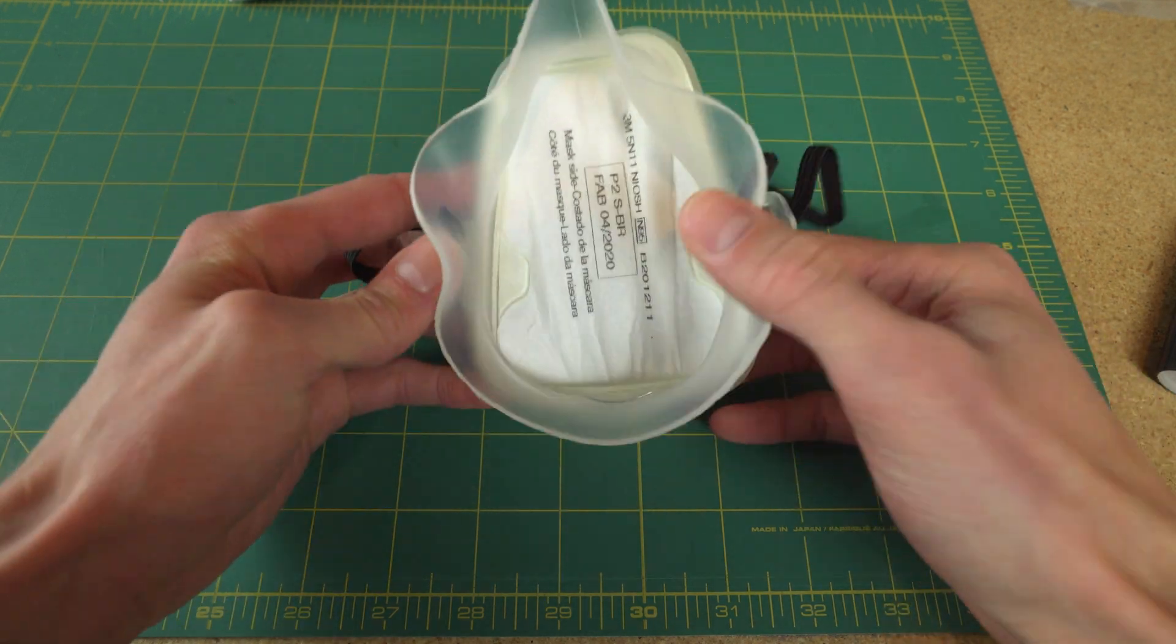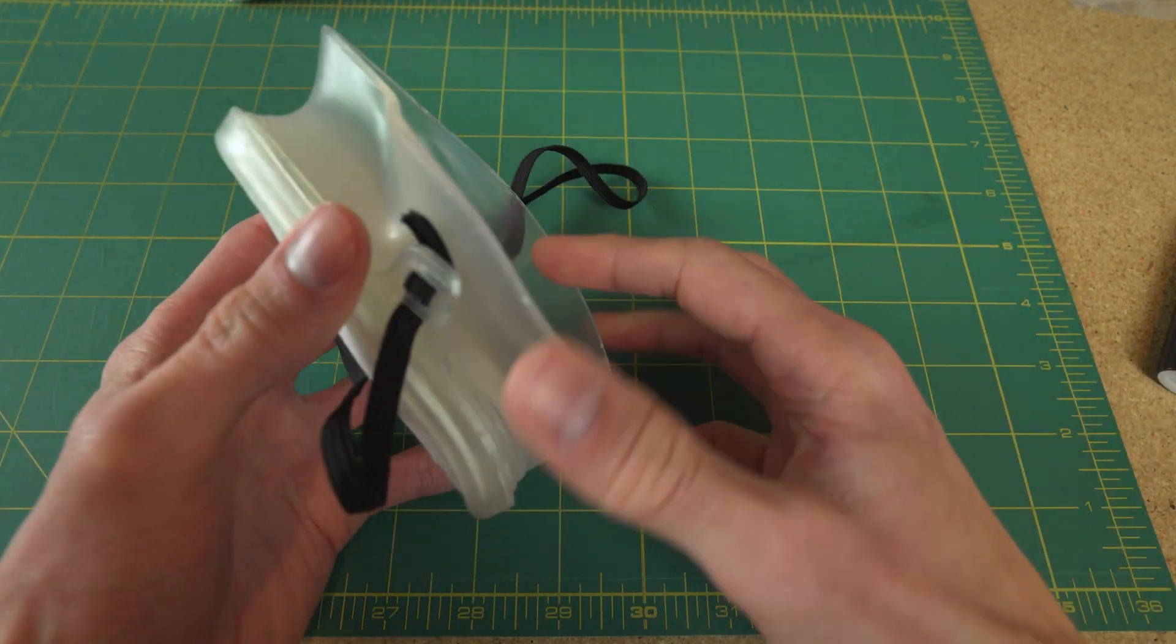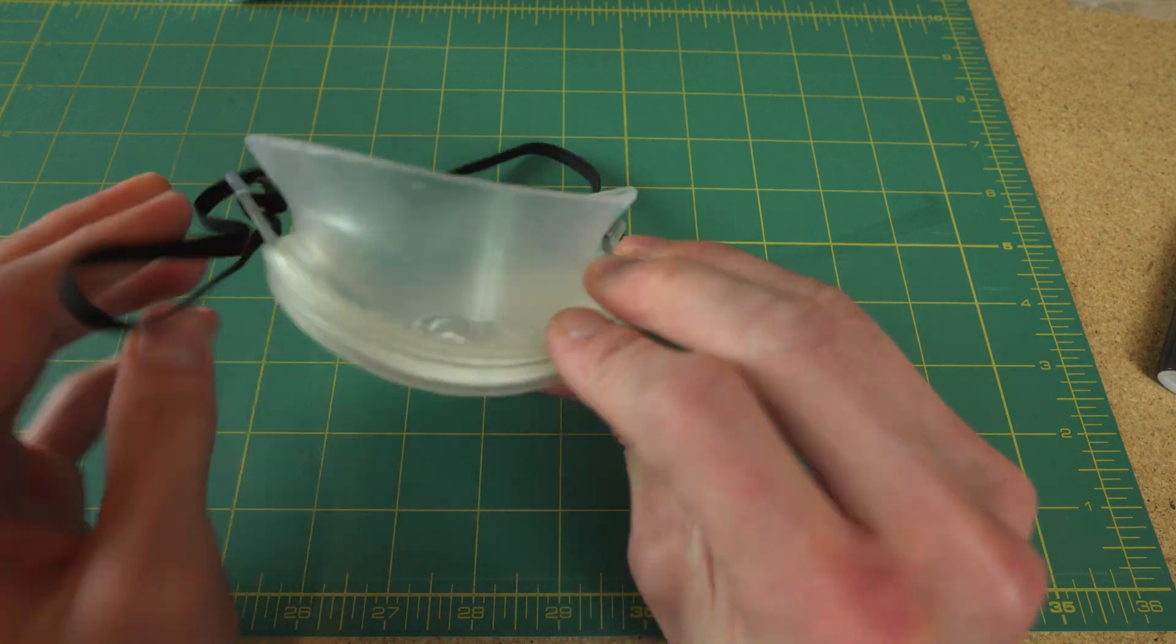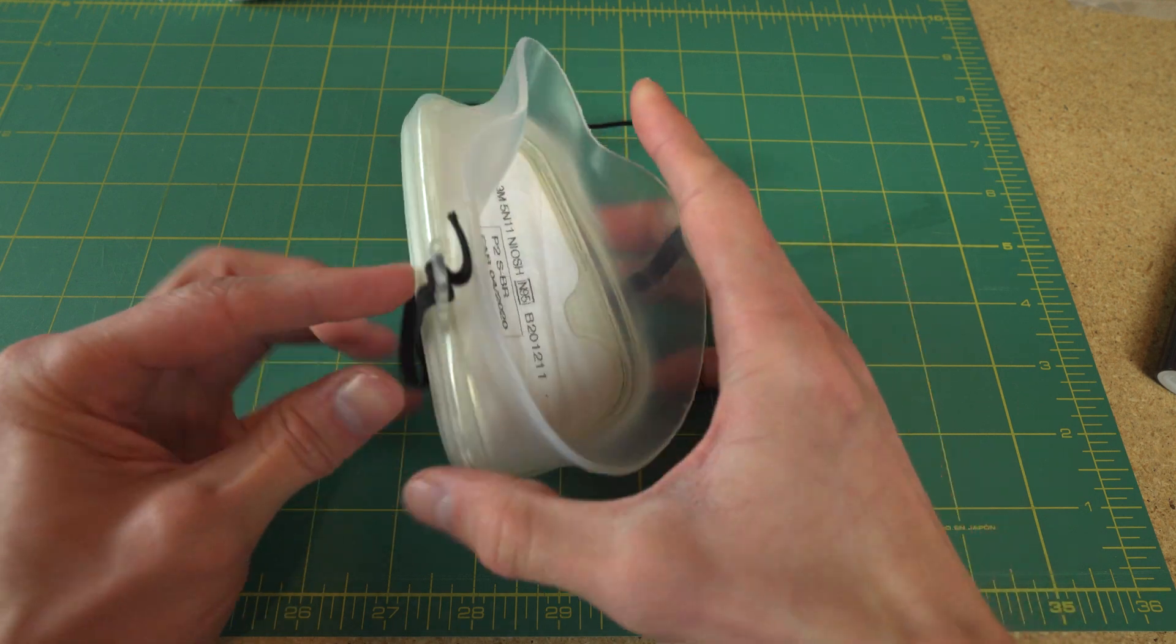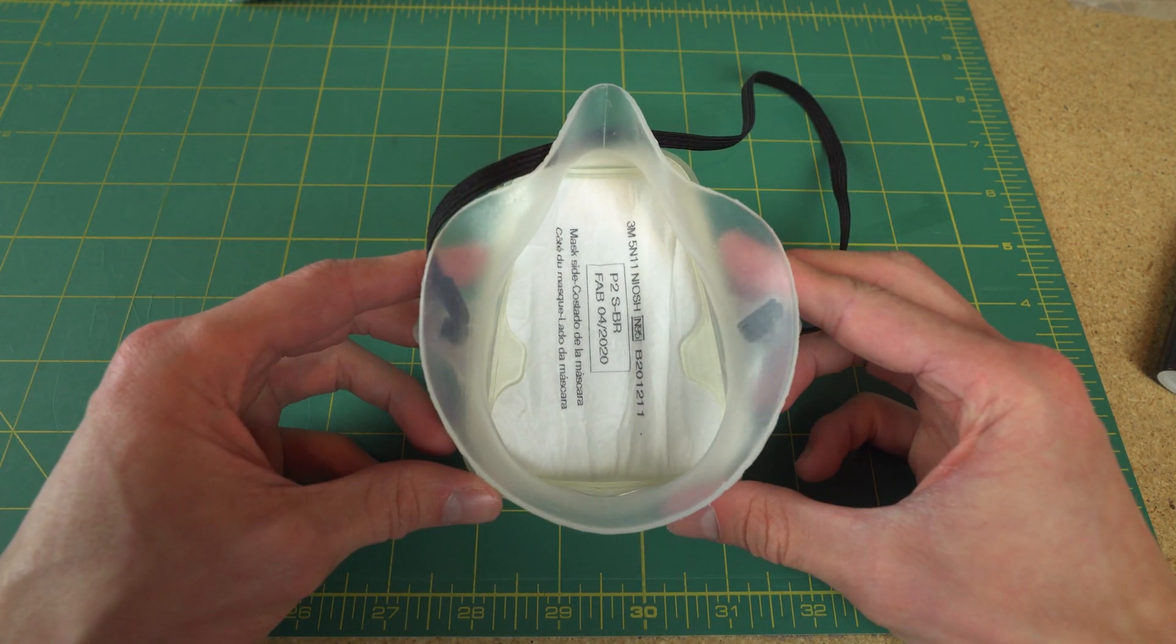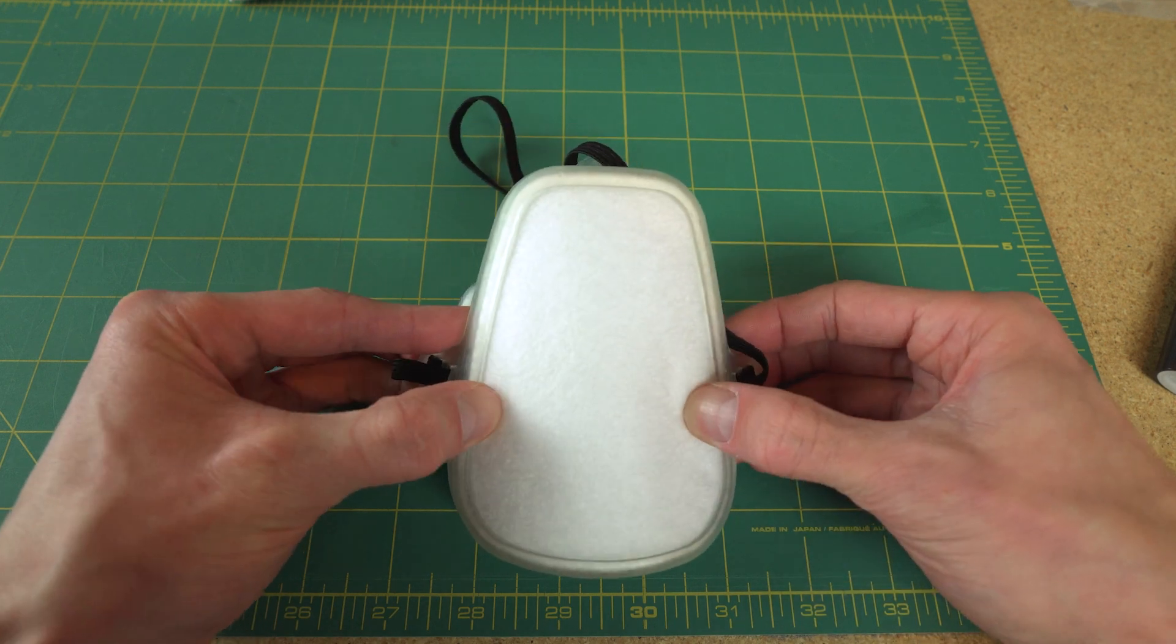The snap feature makes much less of a snapping sound with the filter installed. To replace the filter, simply press all four tabs at the same time.